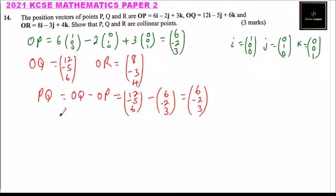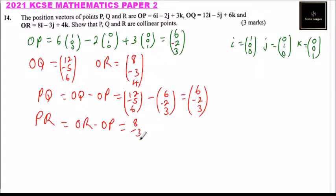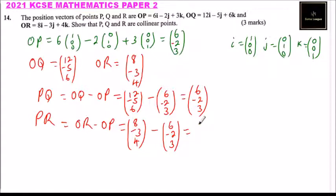Next, let's find vector PR, which equals OR minus OP. OR is (8, -3, 4) and OP is (6, -2, 3). So: 8 minus 6 gives 2, minus 3 minus (minus 2) gives minus 3 plus 2 which is minus 1, and 4 minus 3 gives 1. So PR equals (2, -1, 1).